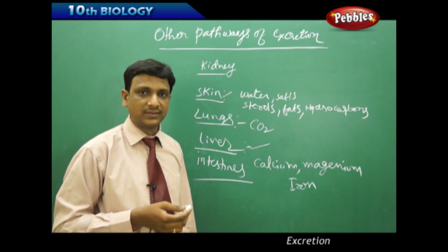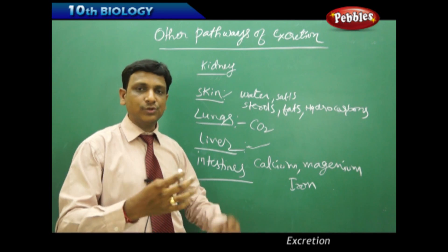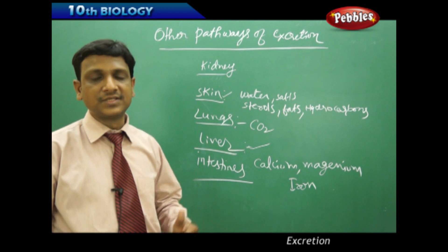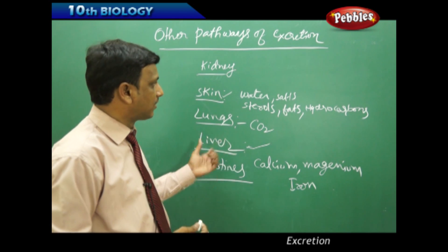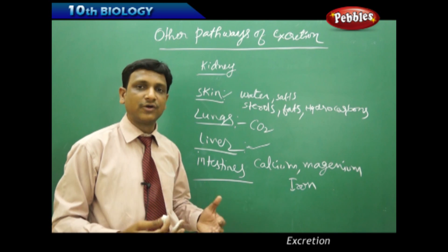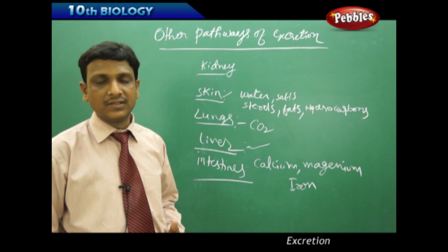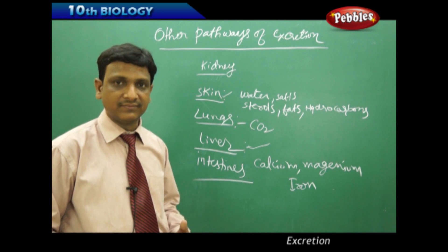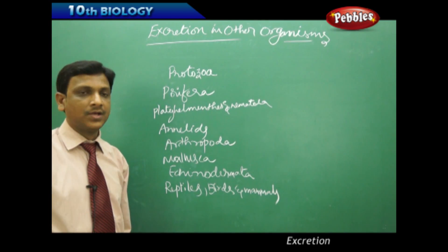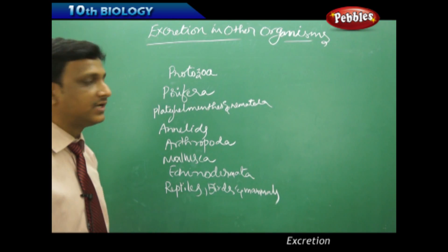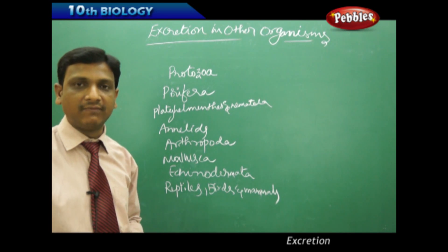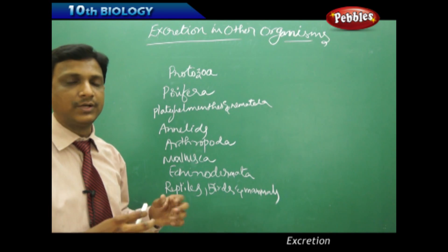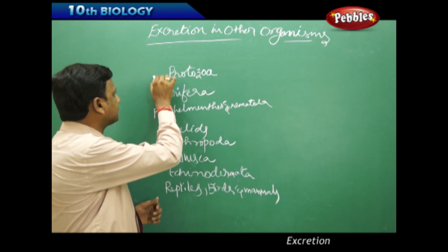The human excretory system is a very well-developed and complex system. Now let us look at the excretory systems of other animals in the animal kingdom. In humans we have a pair of kidneys, a urinary bladder, and a complex excretory system. Let us now look at excretion in other organisms, starting from the simplest forms.